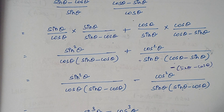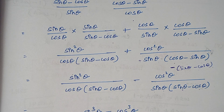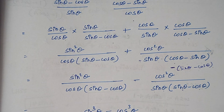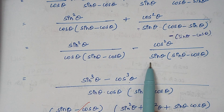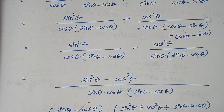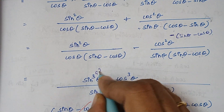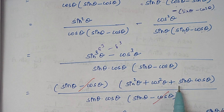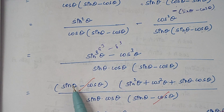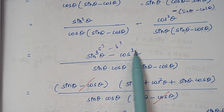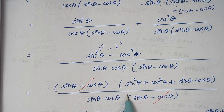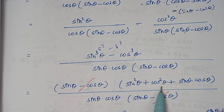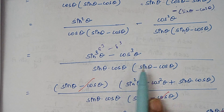Now we take LCM again since we have cos theta and sin theta as separate denominators, but the sin theta minus cos theta terms are the same. Taking LCM: sin square theta times sin theta becomes sin cube theta, and cos square theta times cos theta becomes cos cube theta. The denominator is sin theta into cos theta multiplied by sin theta minus cos theta. This numerator is of the format A cube minus B cube, which factors as A minus B into A square plus B square plus AB. So sin theta minus cos theta times sin square theta plus cos square theta plus sin theta cos theta, all divided by sin theta cos theta times sin theta minus cos theta.